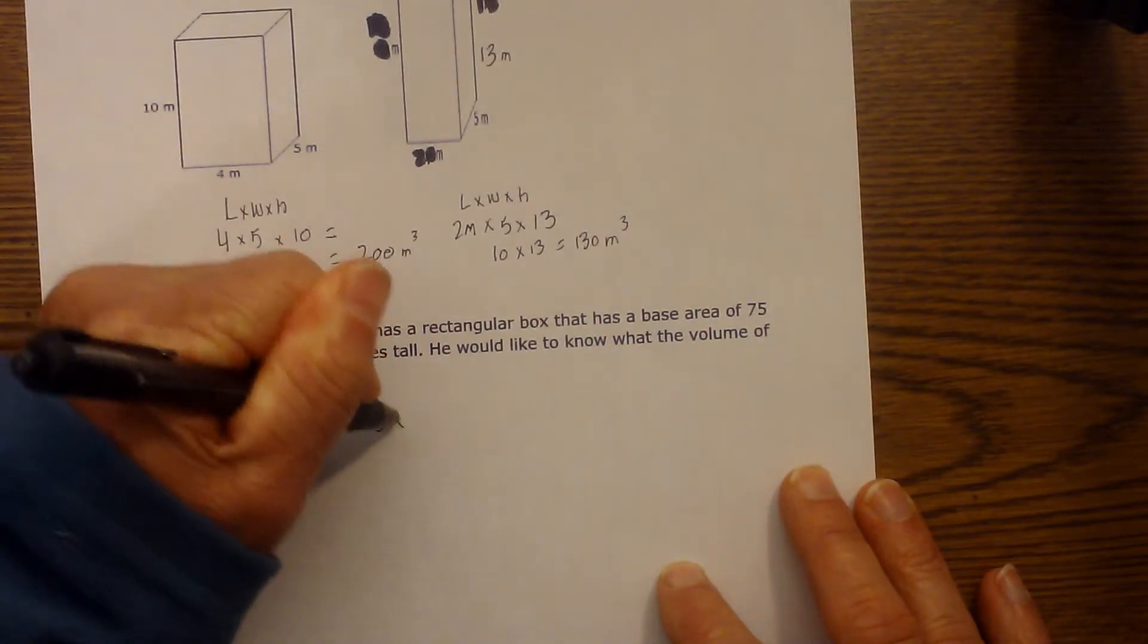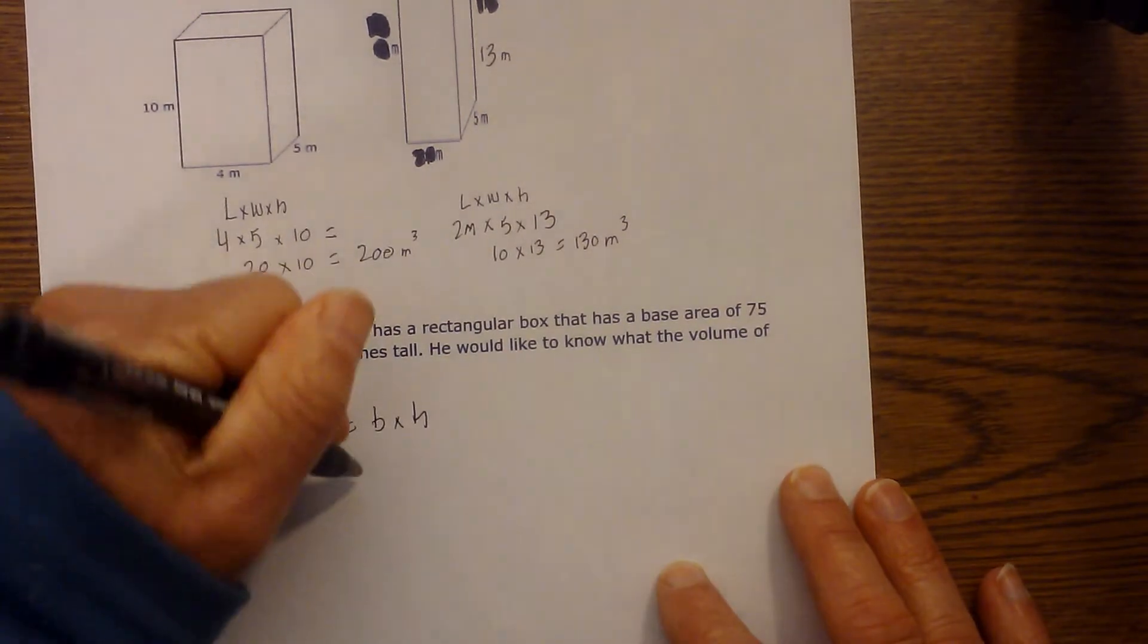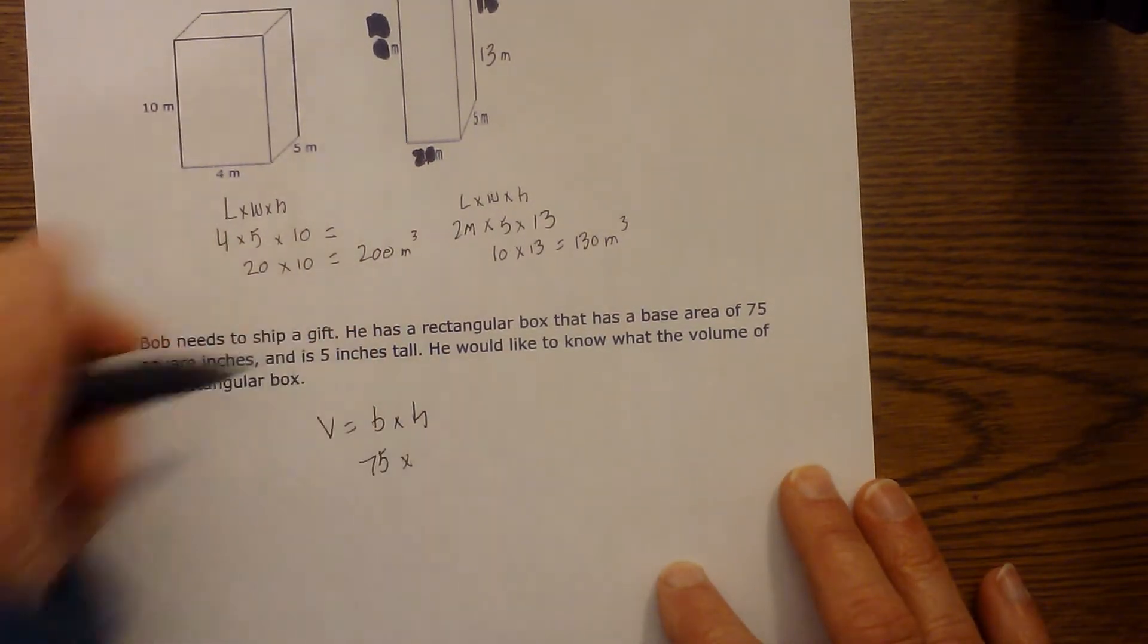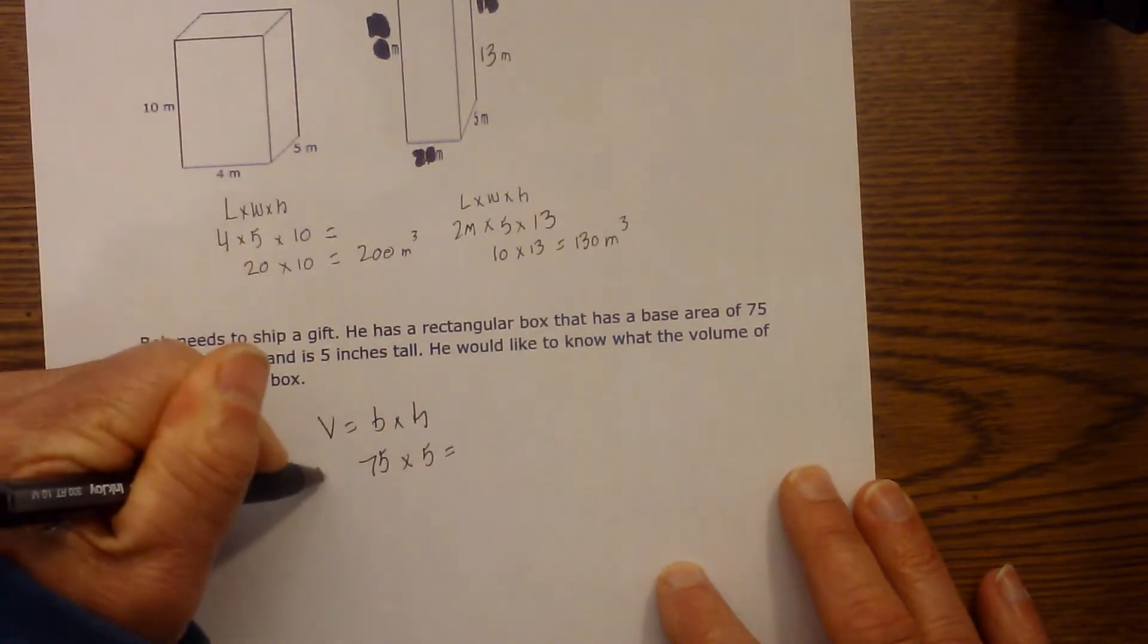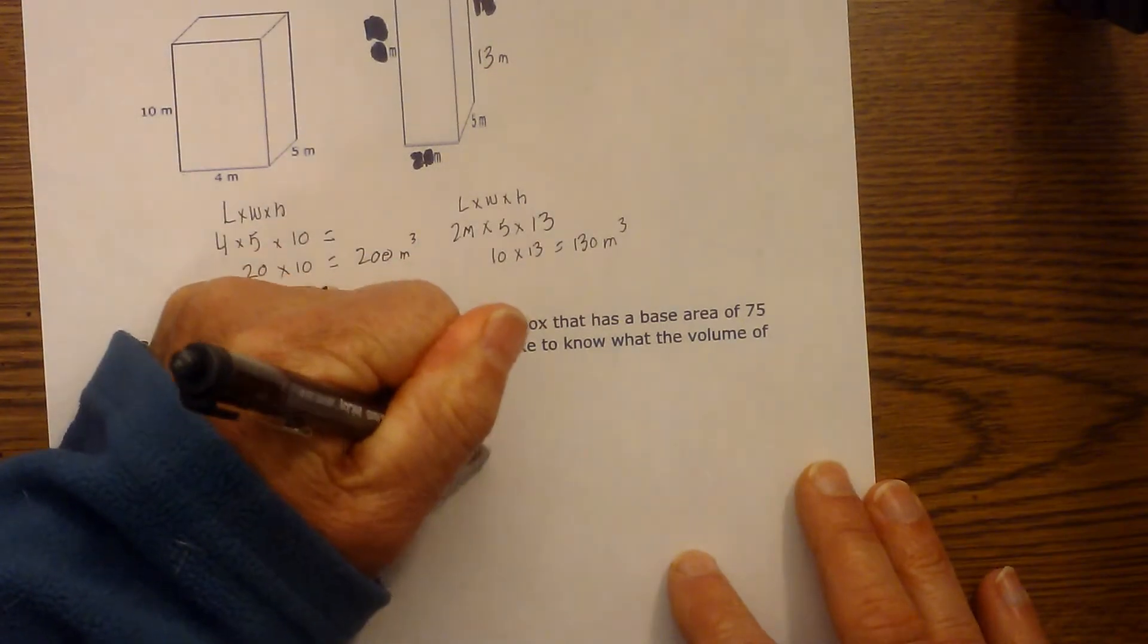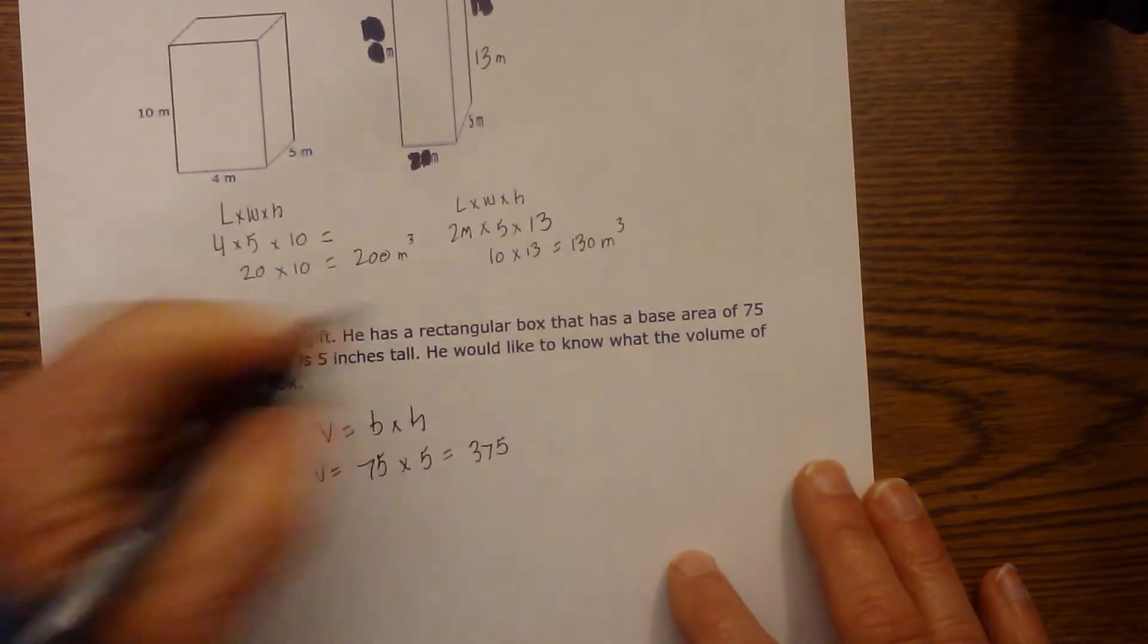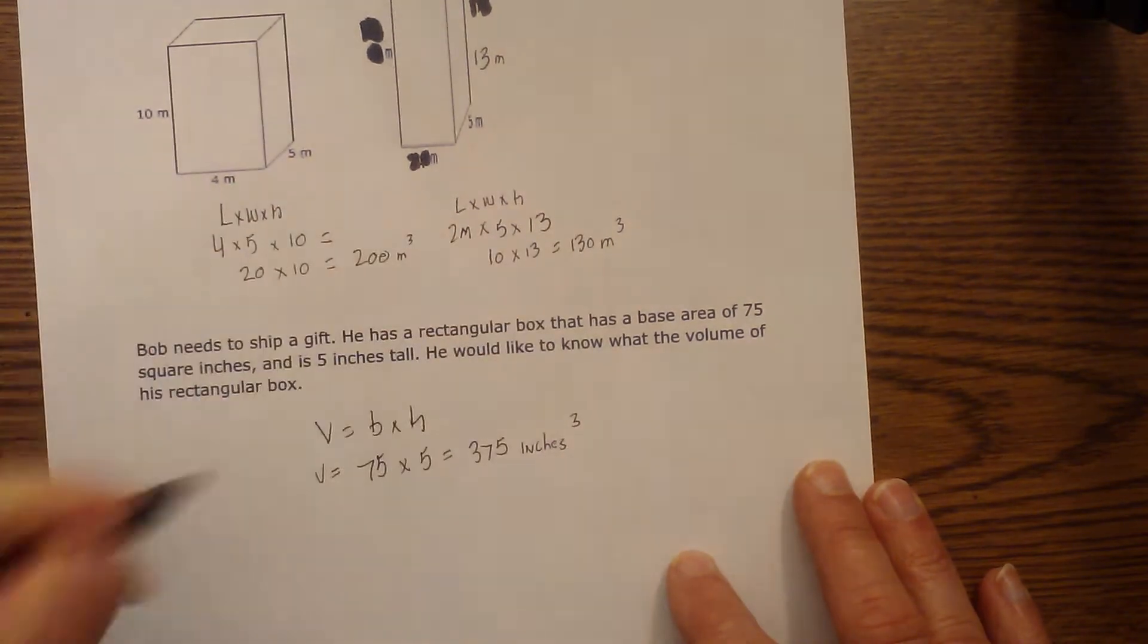So it says the base is 75 square inches. I'll just plug in the number 75. And the height is 5. And so now to find volume, all I do is 75 times 5. And if you multiply 75 times 5, that is 375. And it is in inches, so it will be inches cubed.